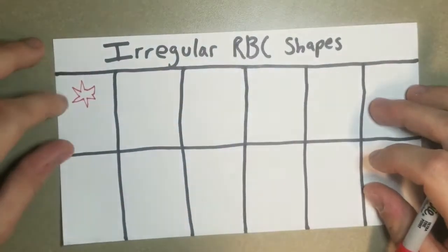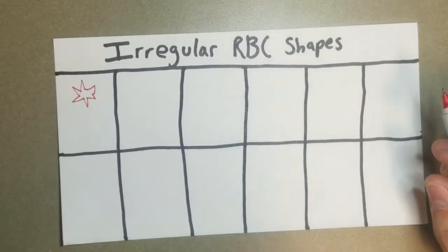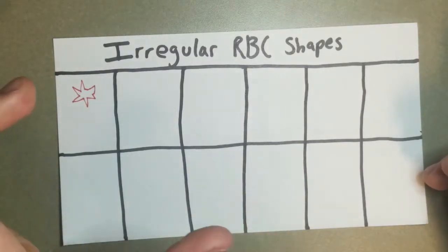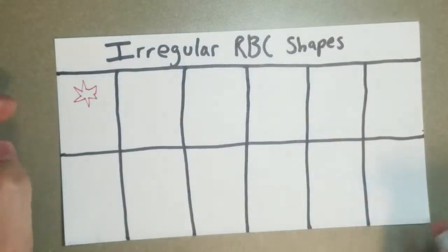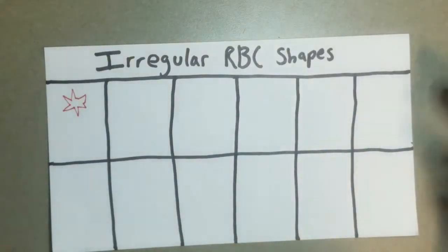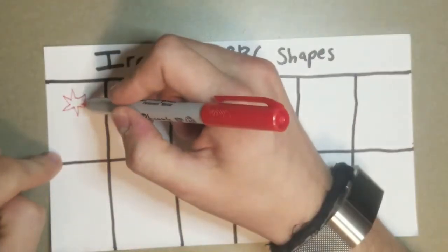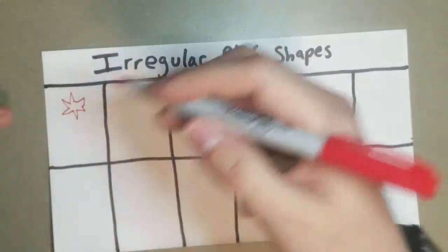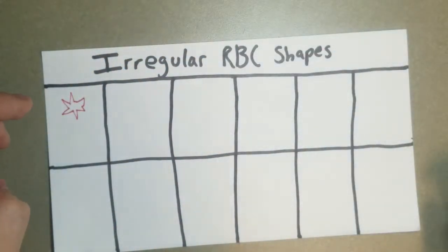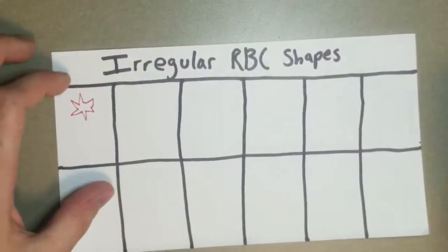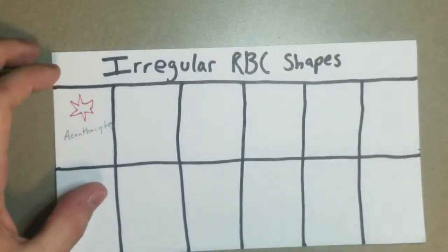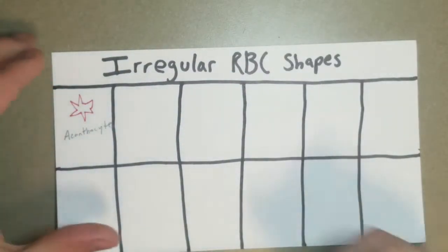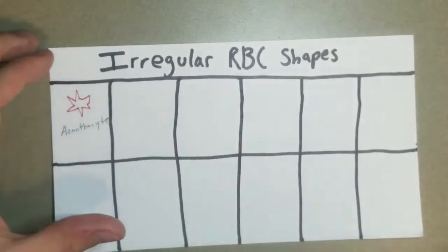To start off, we have this poorly drawn acanthocyte here. The prefix acantho is Greek for thorn, and that's kind of an easy way to think of it. It's kind of spiky in a more natural, irregular, imperfect kind of pattern, and that's actually called irregularly spiculated. The extensions coming off of it are not perfect or parallel or anything like that. So for acanthocytes, you're going to find them mostly in A-beta lipoproteineamias, also in liver disease, usually more on the severe end of that.